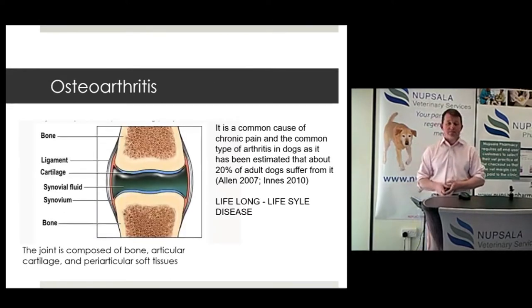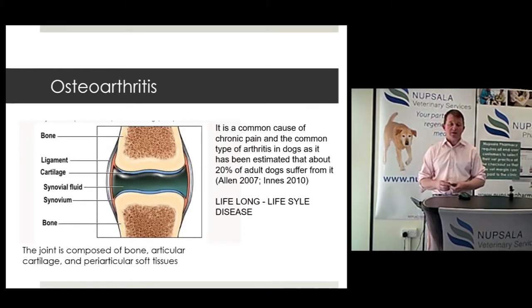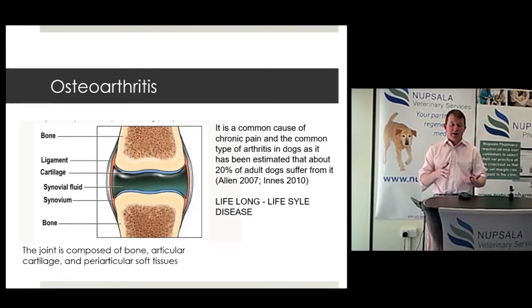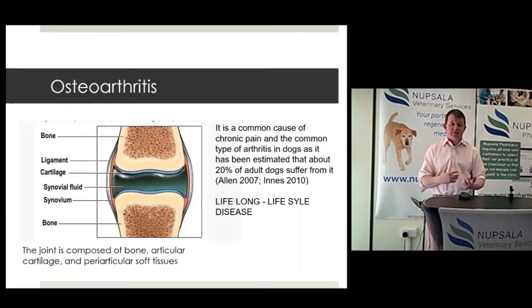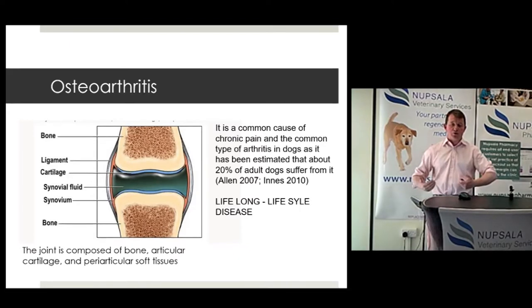To set the scene: the use of biologics today — very much where we use them at NUPSALA and in association with the Veterinary Osteoarthritis Alliance — is in musculoskeletal disease, looking at both equine and canine. For equine clinicians, understand that the disease manifests itself in the soft tissues first, and so it affects a greater proportion of animals under your care than you may have understood.